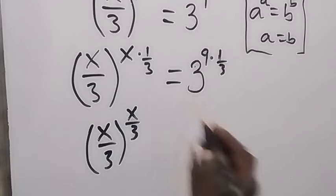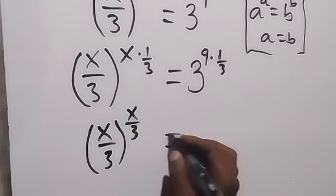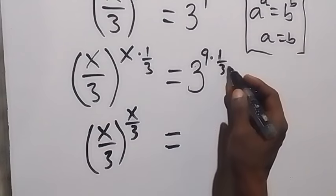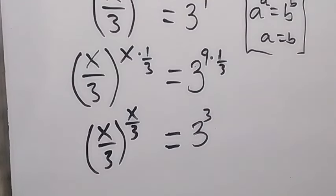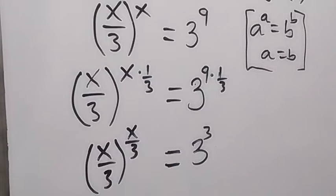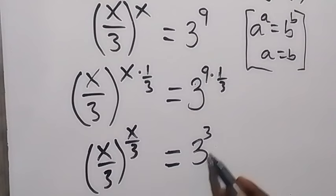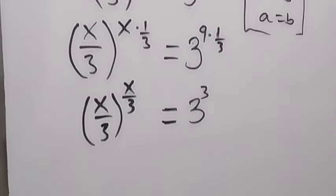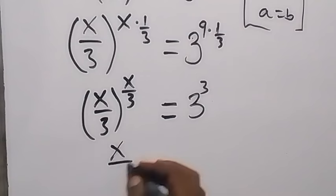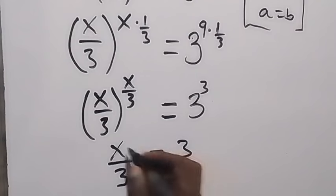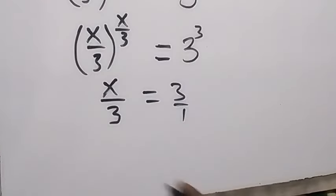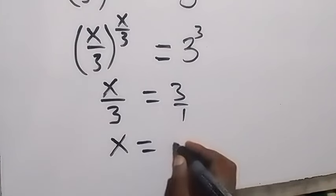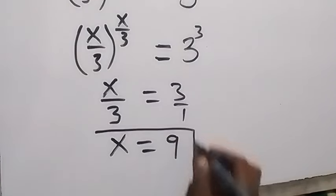So (x over 3) to the power of (x over 3) equals, on this side, 3 raised to power 3. Comparing with the form a raised to power a equals b raised to power b, we can equate and say x over 3 equals 3, which is the same as 3 over 1. When we cross multiply, we discover that x equals 3 times 3, which is 9.